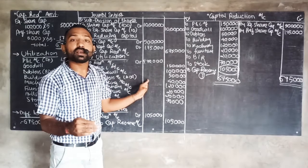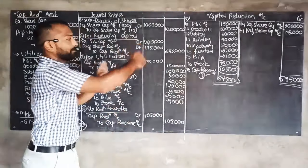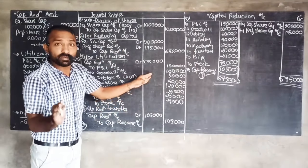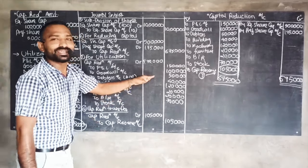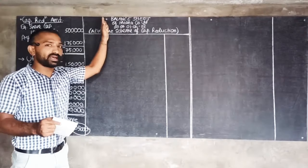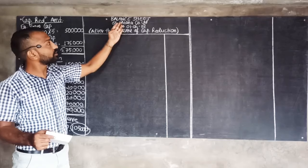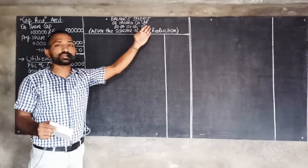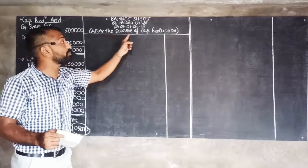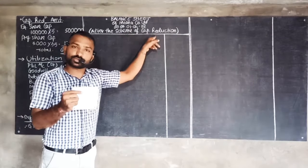We now prepare the revised balance sheet of Meena Company Limited as on 1st April 2019, after the scheme of capital reduction. This heading with 'after the scheme of capital reduction' must be written compulsorily.